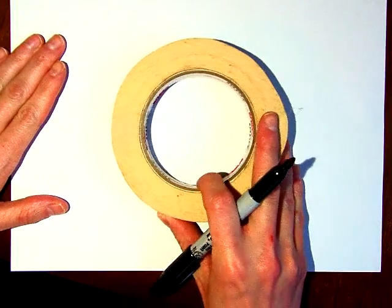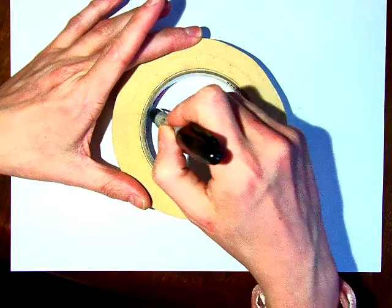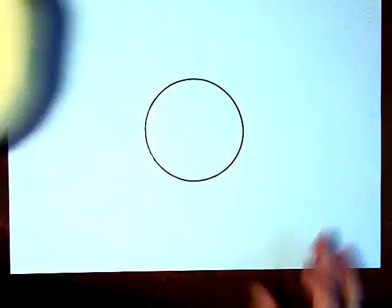So if you don't trust yourself to draw a circle, you can use something to give yourself that circle shape. I'm just going to trace right on the inside of this roll of masking tape.